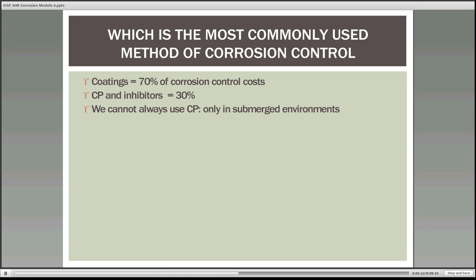It would be great if we could apply cathodic protection to everything — we'd have very little in the way of corrosion problems. Unfortunately, cathodic protection only applies to submerged environments, buried structures in the soil, in concrete, or in the sea. You can do CP in concrete — it's a nice system where you can actually apply cathodic protection to the rebar that's embedded in concrete, but that's another story.